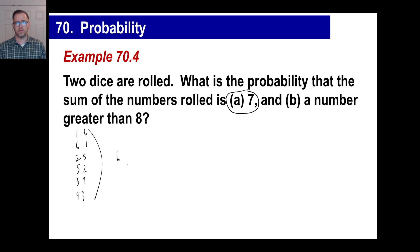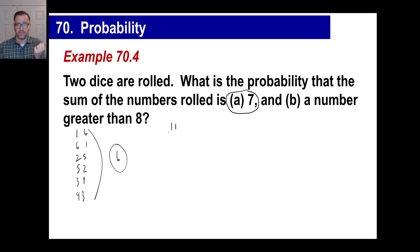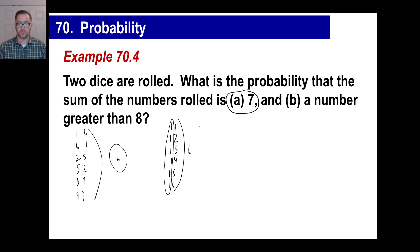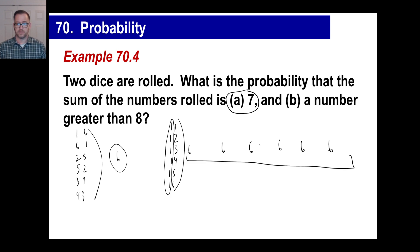How many total possibilities are there when rolling two dice? If you roll a one first, there are six possibilities for the second die. The same logic applies for each of the six values on the first die, giving six groups of six. Six times six equals 36 — that is the total number of outcomes you can roll with two dice.